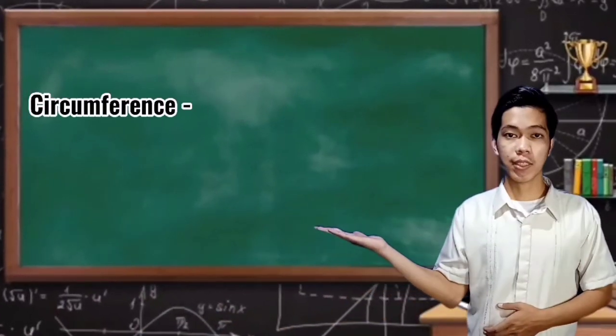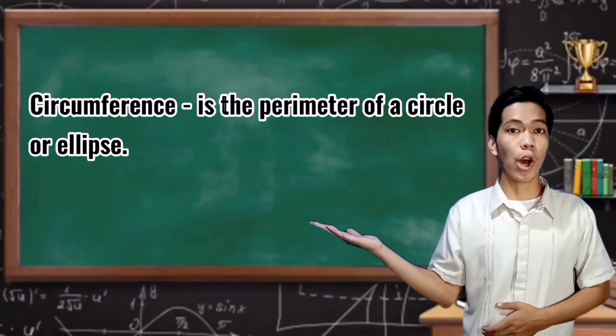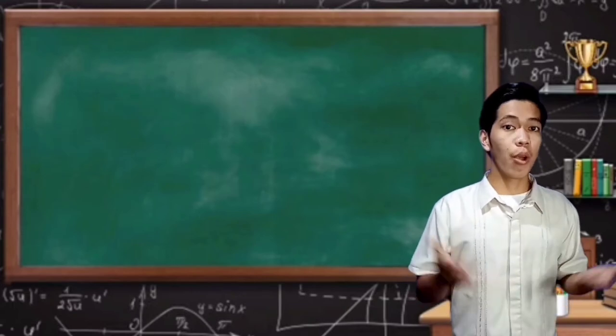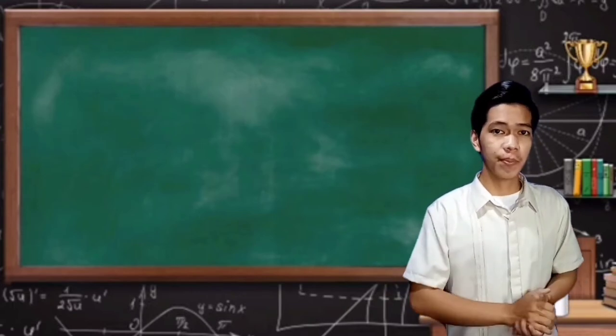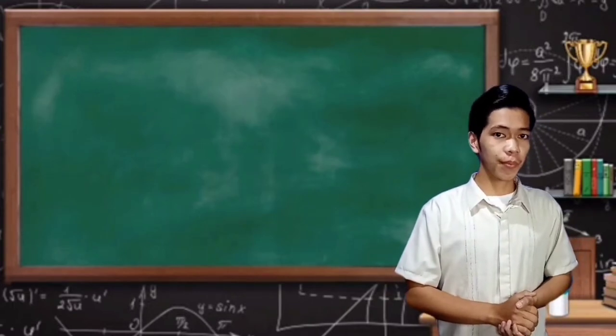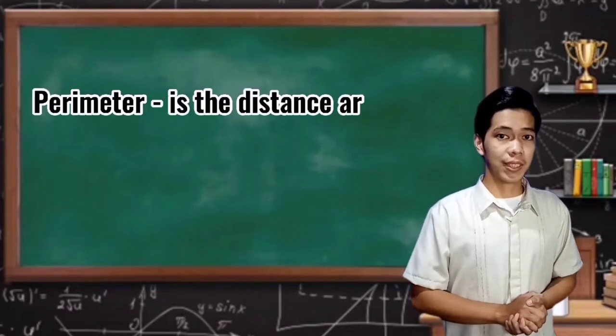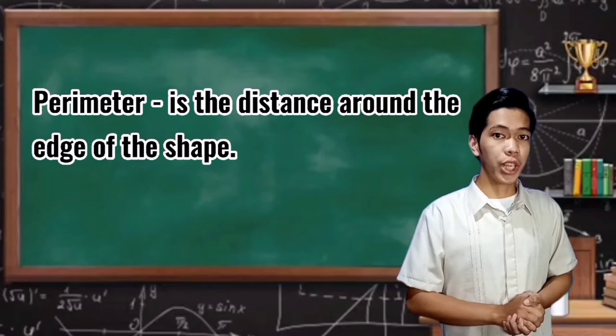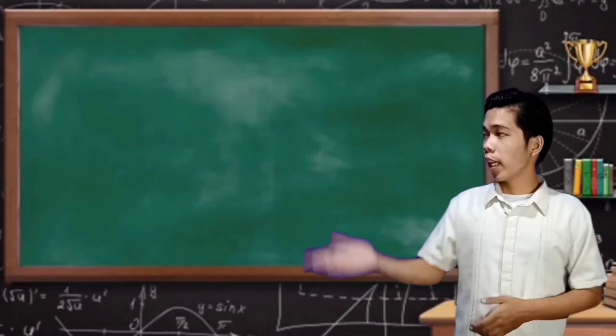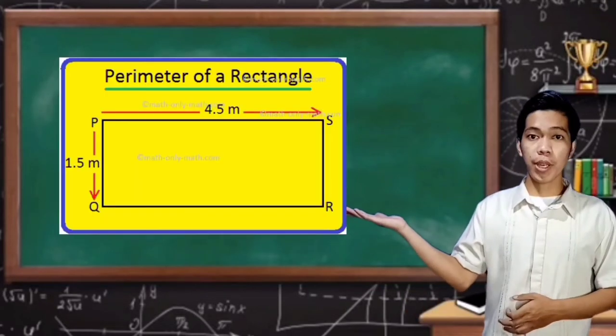Circumference is the perimeter of a circle or ellipse. What is perimeter again? Very good. Perimeter is the distance around the edge of the shape. Here is an example of perimeter.